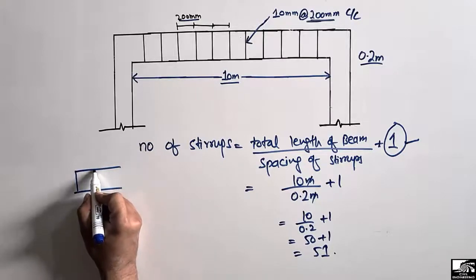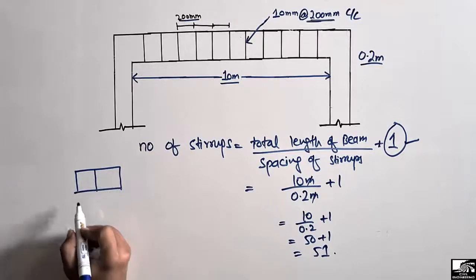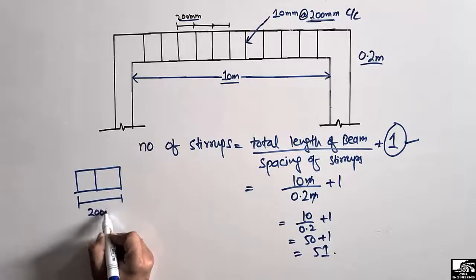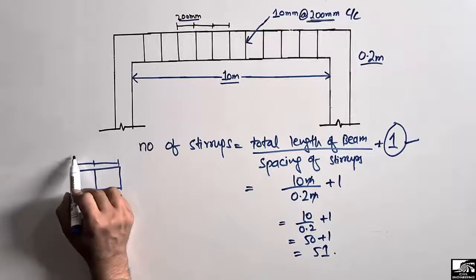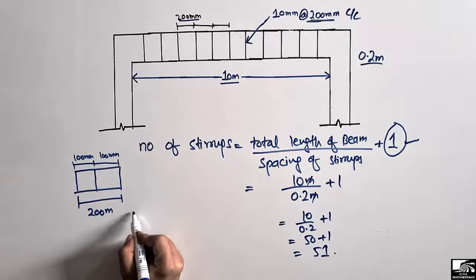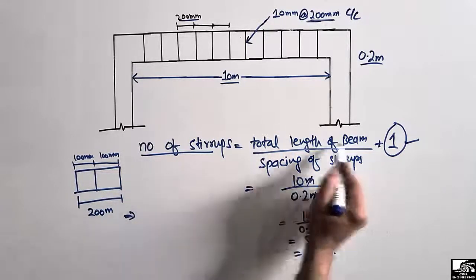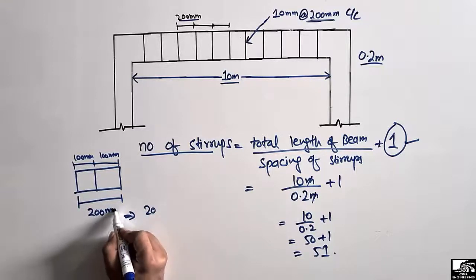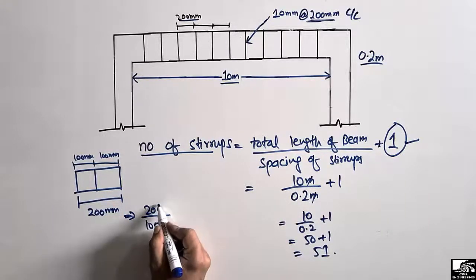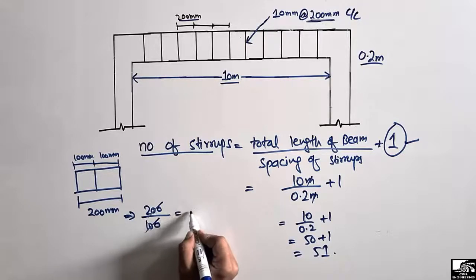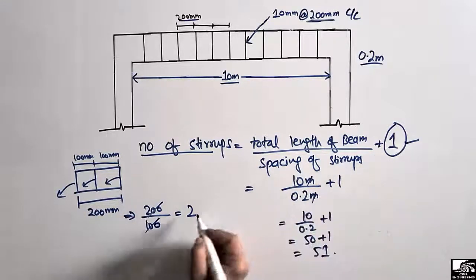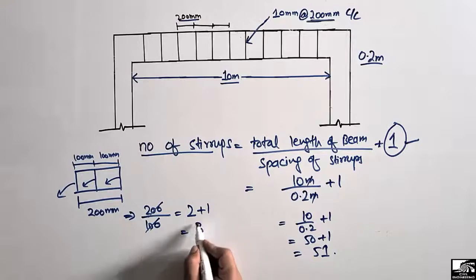Consider a simple case with 3 stirrups — 1, 2, and 3. The total length is 200 mm and the center to center distance between the stirrups is 100 mm. Using the formula without +1: 200 divided by 100 equals 2. But we actually have 3 stirrups, not 2. That is why we add 1 to the formula to find the correct total number of stirrups used in a beam.